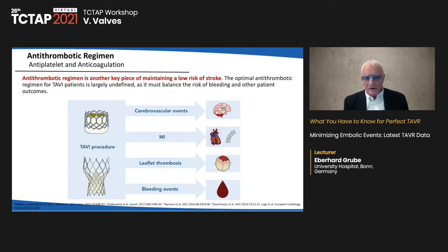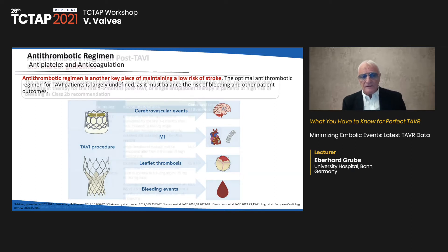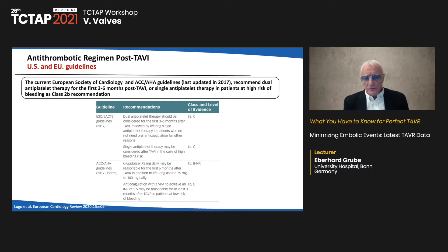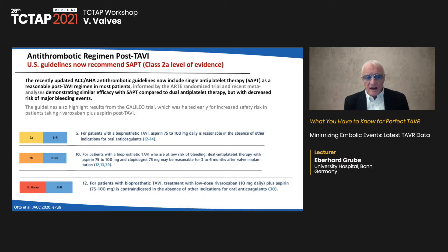Antithrombotic regimen is another key piece in maintaining a low stroke risk. Current European and US guidelines last updated 2017 recommend dual antiplatelet therapy for three to six months post-TAVR, or single antiplatelet therapy in patients at high bleeding risk as a class 2B recommendation. Recently updated US guidelines recommend single antiplatelet therapy as class 2A, as it shows similar efficacy to DAPT with reduced major bleeding.